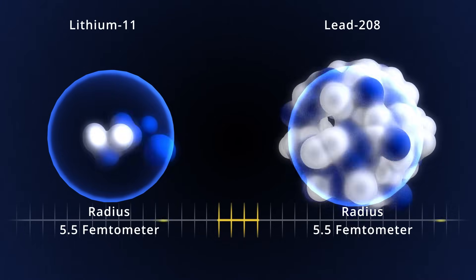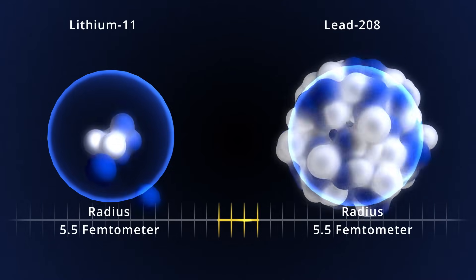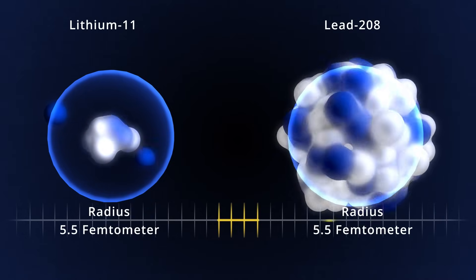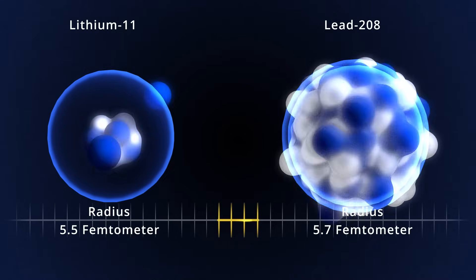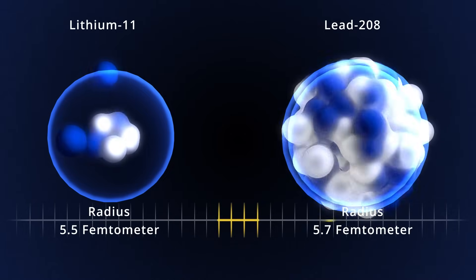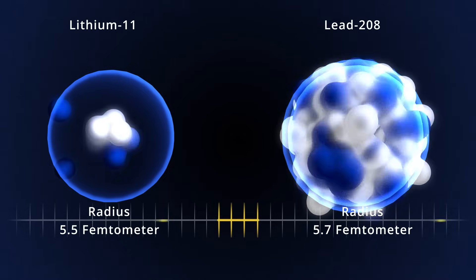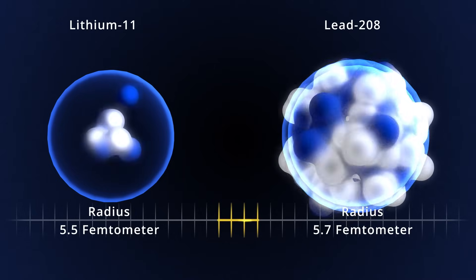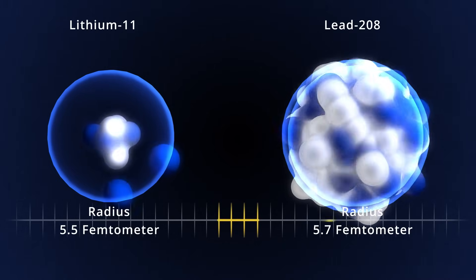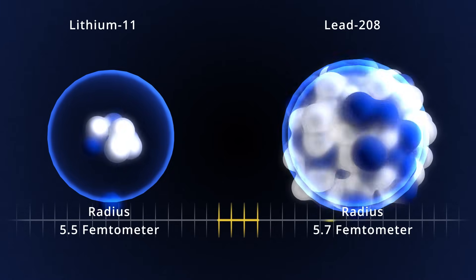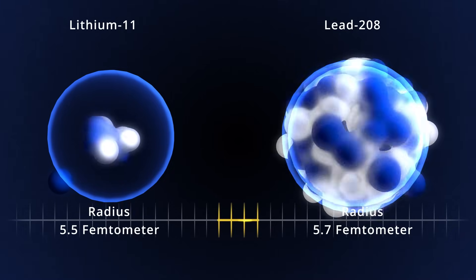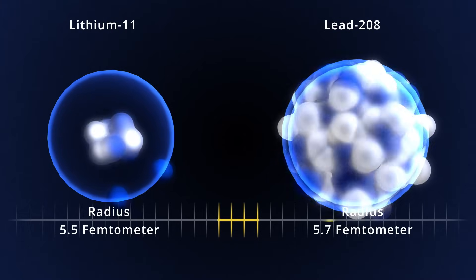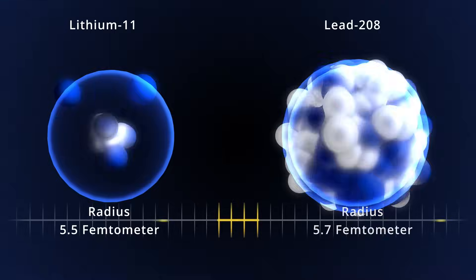Many heavy nuclei, such as lead-208, have a surplus of neutrons that one would expect to be on the outside and form a neutron's skin. Indeed, the radius that neutrons occupy in lead-208 is larger than that of the protons. But despite the large surplus of 44 neutrons, the difference is only 0.2 femtometers. This is due to the specifics of the proton-neutron force.